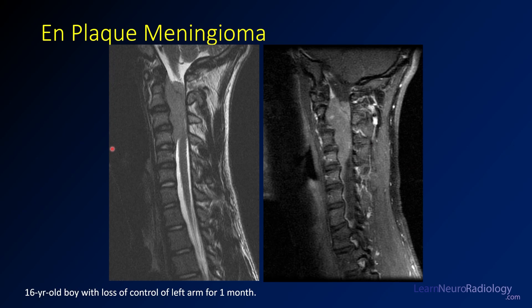This is an example of an en plaque meningioma. Rather than being rounded and focal, it extends along a longer length of the spinal canal. On T2 you see the mass extending from about C2 to C4 — T2 intermediate to dark — and you can catch a little bit of the dura traversing through it, so it's partially intradural and partially extradural. On post-contrast images, you see avid enhancement, some scalloping of the bone, and dural tails extending along the lesion. This was a 16-year-old boy having trouble controlling his right arm for about a month.